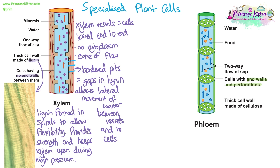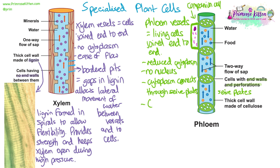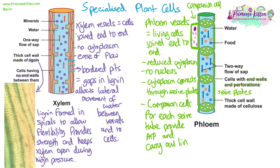The phloem is made of specialised cells that have end walls with perforations called sieve plates. The cells are joined end to end to form the phloem vessels, and unlike xylem, the cells are living. However, they have reduced cytoplasm, no nucleus, and very few organelles. In order for them to function, each sieve cell has companion cells associated with it. These companion cells carry out all the living processes the sieve cells require — they contain a nucleus and mitochondria, which allows them to produce ATP and carry out processes such as active transport that the sieve cells cannot perform.